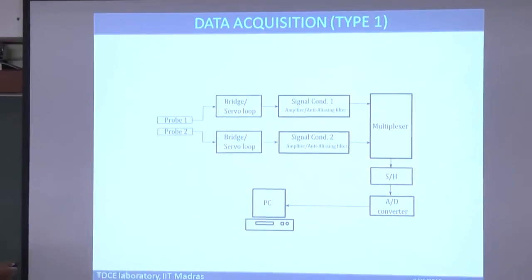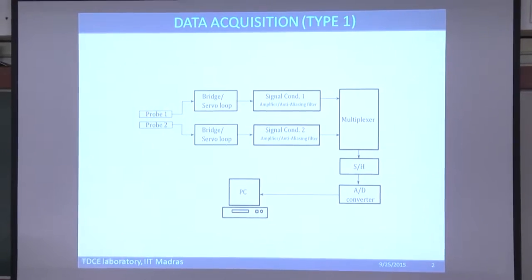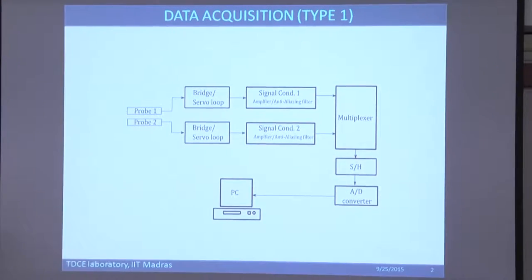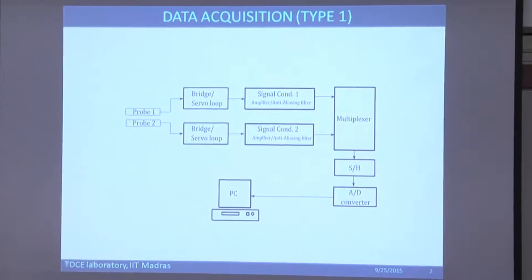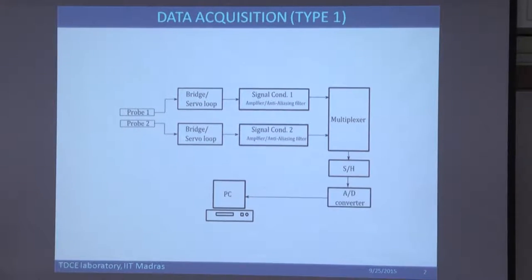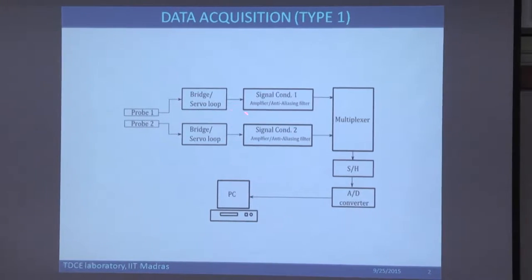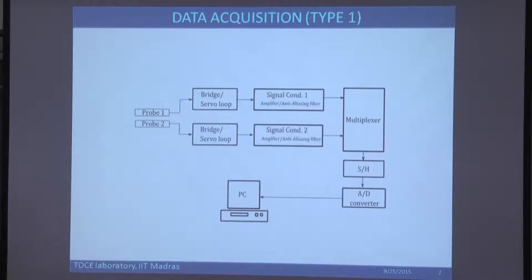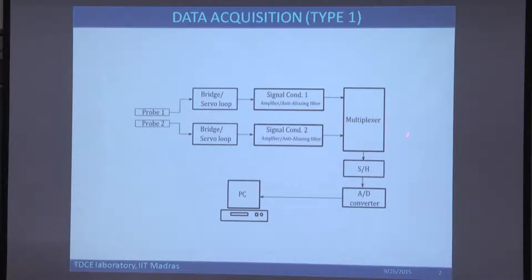Looking at the data acquisition schematic: in the context of hot wire, there is a bridge — the Constant Temperature Anemometer (CTA) bridge — with four resistances and a feedback loop. Then there is a signal conditioner, which can be part of the A/D card and can perform amplifying and filtering. After signal conditioning, the data goes to a multiplexer.